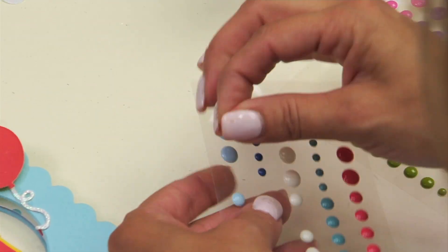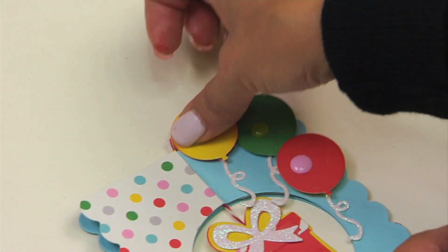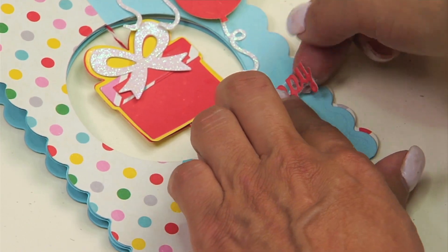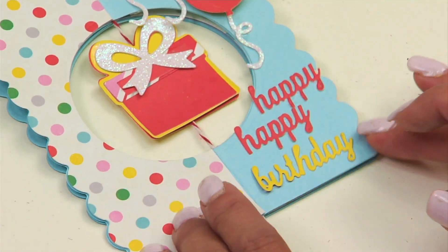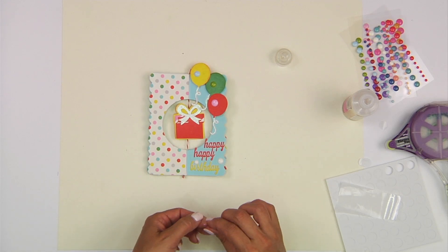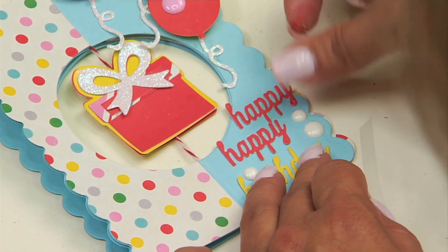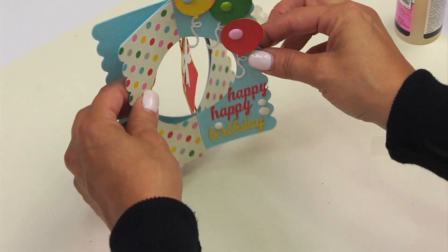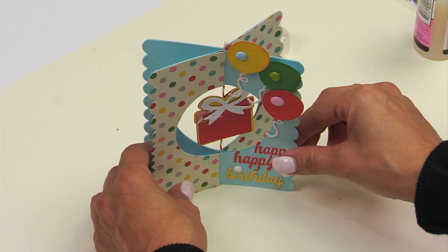And then just as an added touch, we'll add enamel dots to each of the three balloons. Now we're going to add our sentiment to the bottom of our card. I've already run them through the xyron. For a final embellishment, we're going to add enamel dots. We're going to dot our eye in our sentiment and add two more on the outer edge. And here's the completed project.